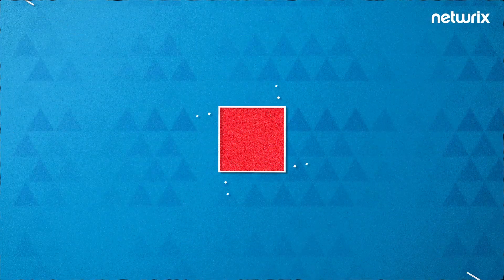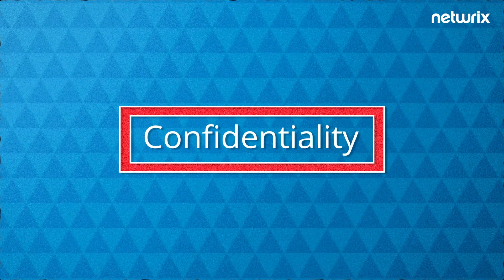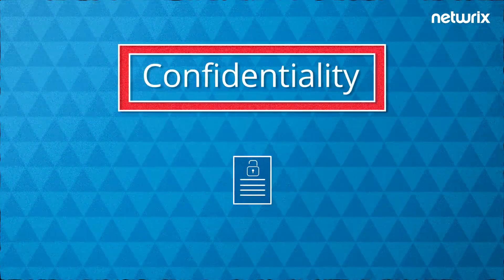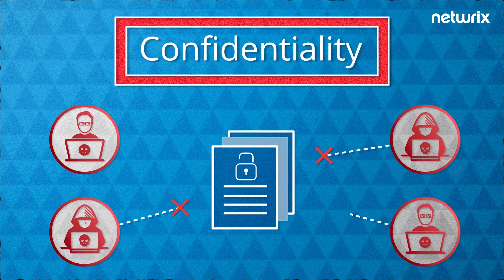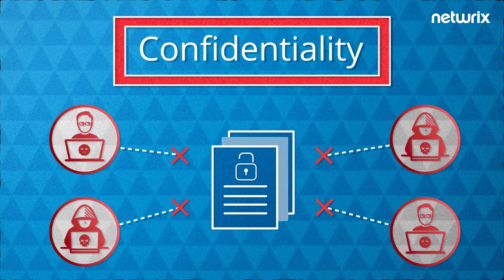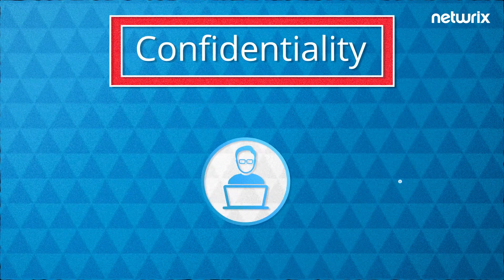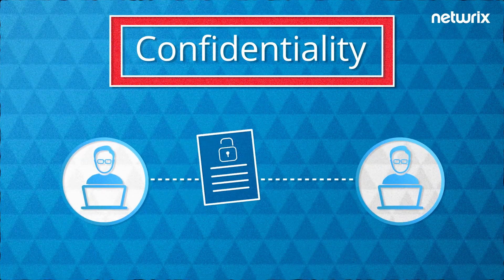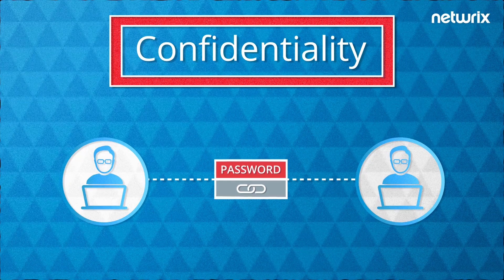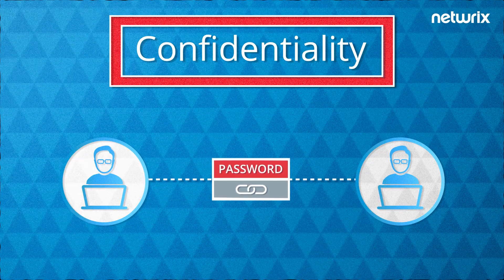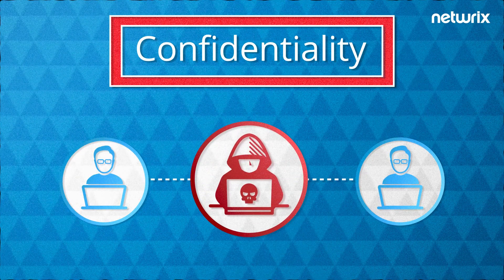The first component of the CIA triad, confidentiality, is about preventing sensitive data from reaching the wrong people. To protect confidentiality, many organizations require users to send business-critical documents via a password-protected link rather than as an email attachment that could be intercepted by hackers.